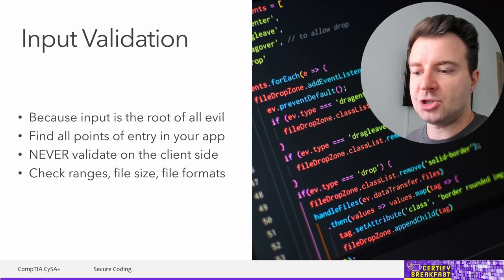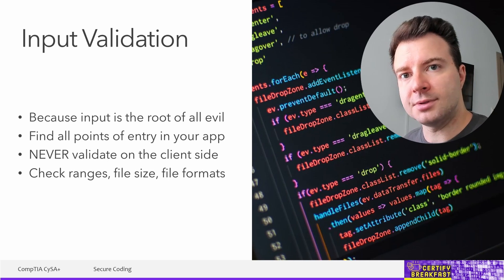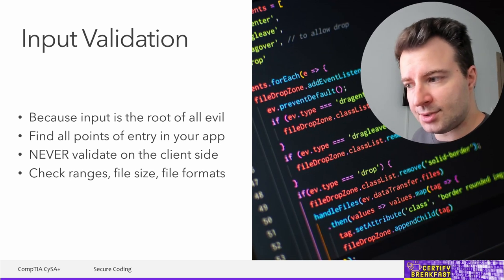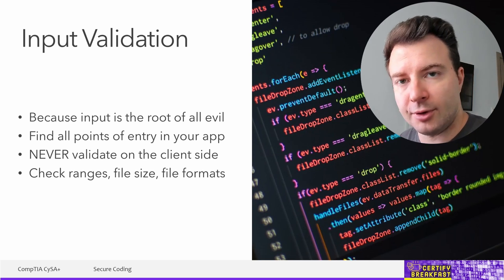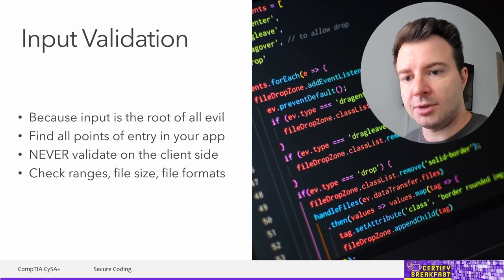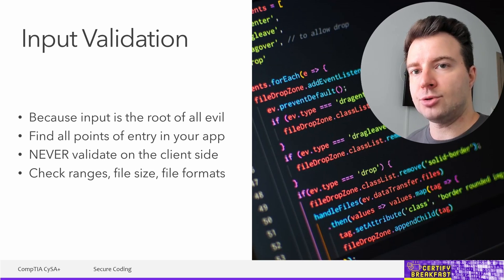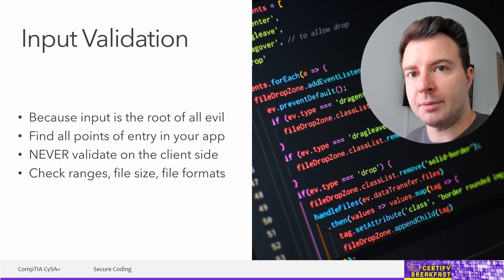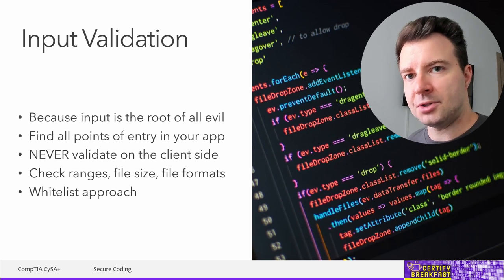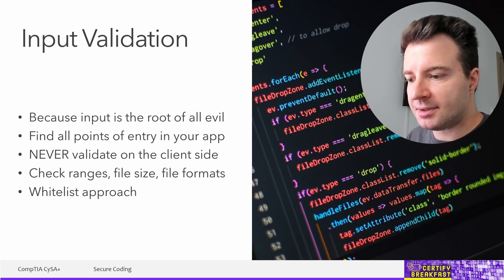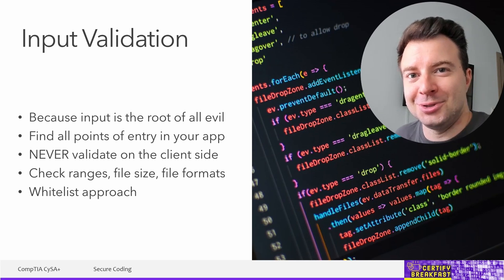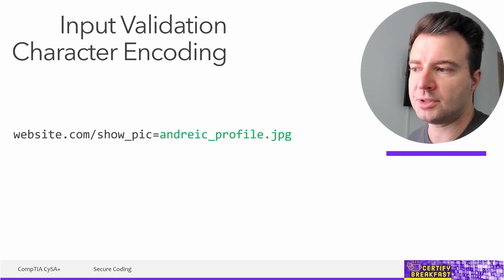For web forms, you must check on the server side: the data type received — a person's name should only include letters; a date should be between a minimum and maximum. Check every piece of information falls within a predefined range for age or quantity. Make sure you don't get huge numbers or negative values. When users upload files, check that you're not receiving huge files and verify the files are actually the valid types expected — a profile picture should be JPEG or PNG, a resume should be PDF. A whitelist approach is easier than thinking about all the potential junk users might submit.